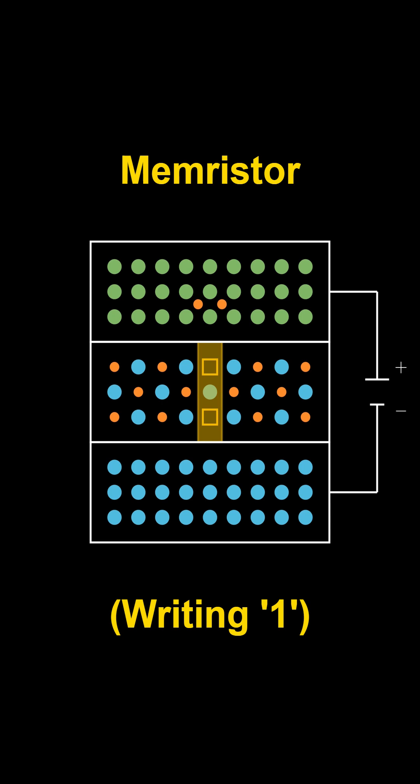The current state of the device is called the low resistance state, which can be considered as binary one, or we can say the device is on.